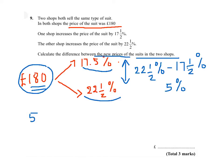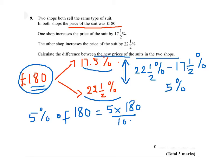So we need to work out 5% of £180, which is 5 times 180 divided by 100. Or we know that 10% of 180 is £18, therefore 5% will be half of that. So the answer is £9.